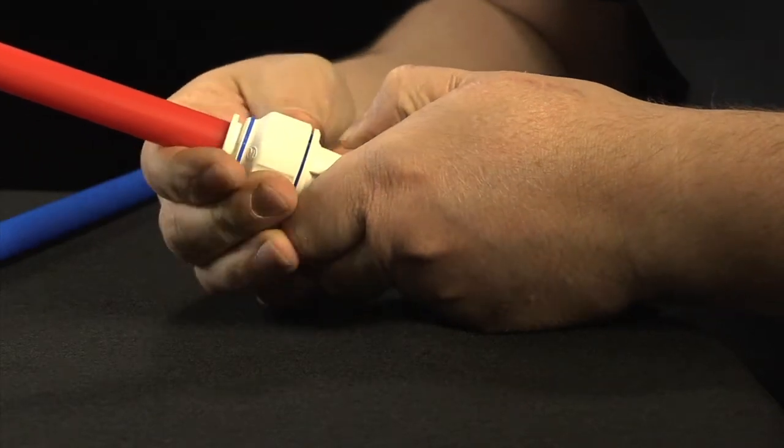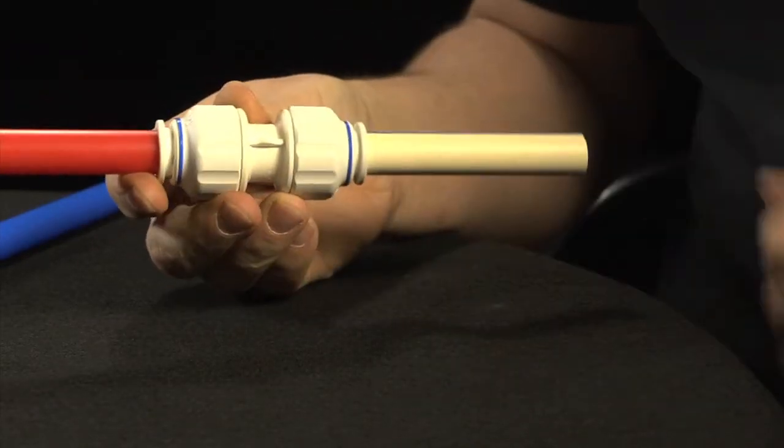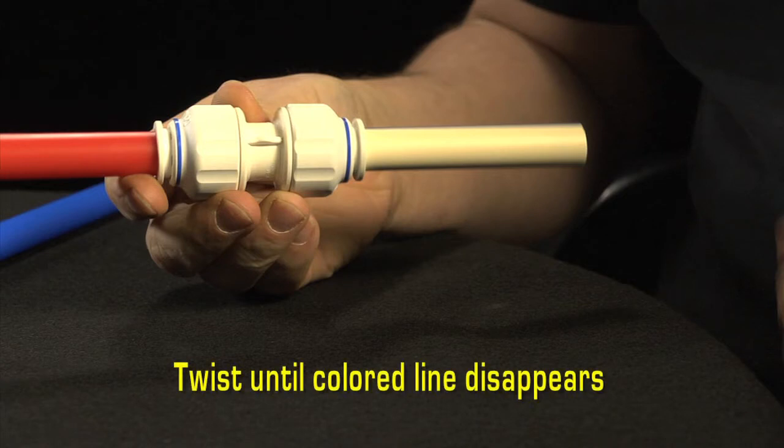To lock fitting, hand twist fitting until colored line is no longer visible. This confirms a proper, secure fit. Do not use any type of wrench to tighten the nuts.